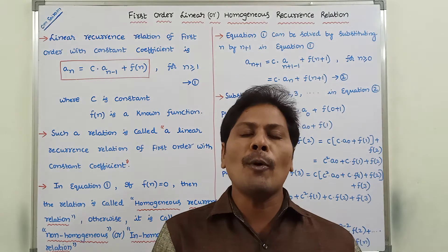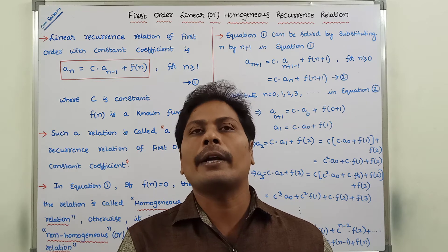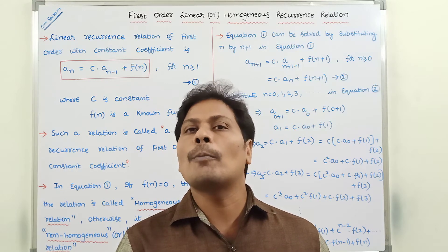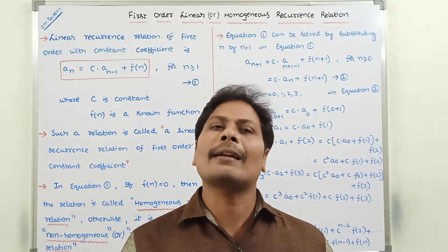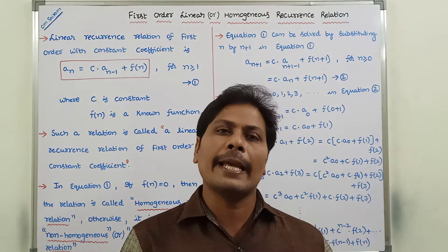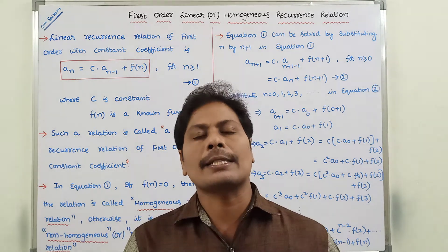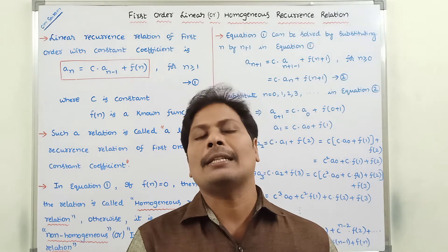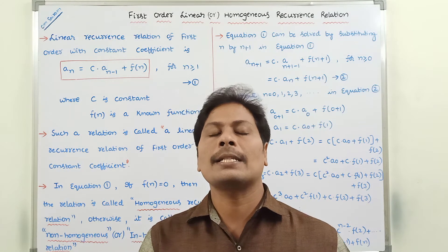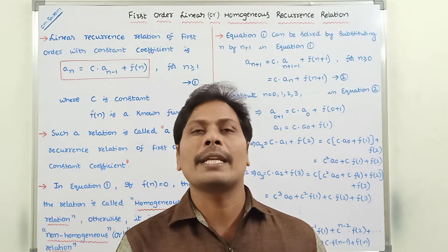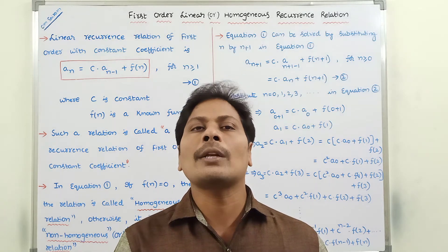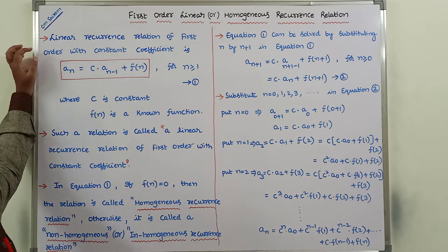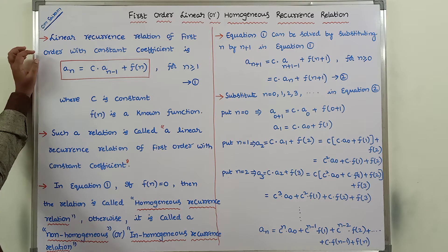In homogeneous, again there are three types: first-order, second-order, third-order, and higher-order homogeneous recurrence relations. In the same way, in non-homogeneous recurrence relations, again there are three types: first-order, second-order, third-order, and higher-order non-homogeneous recurrence relations.